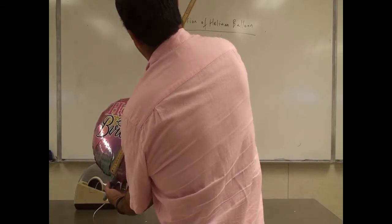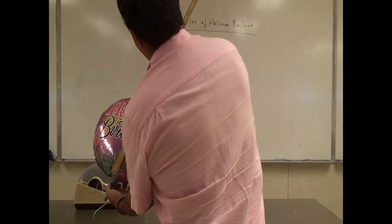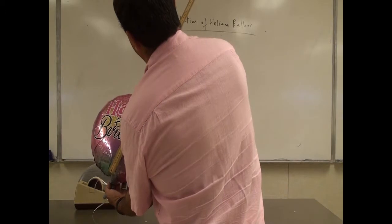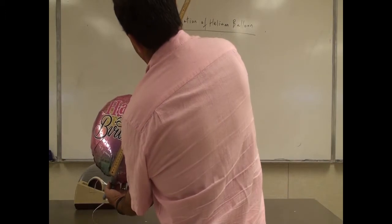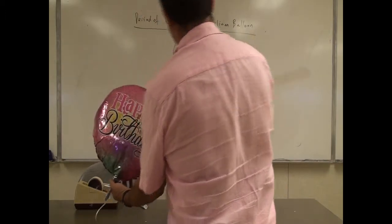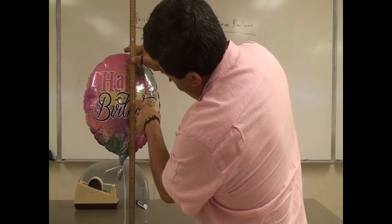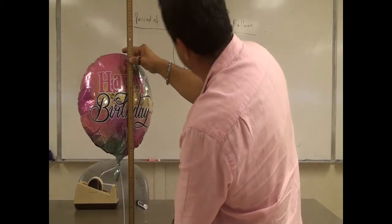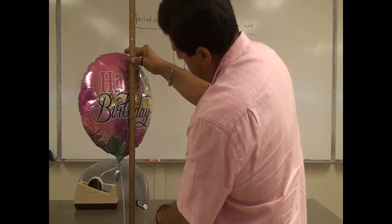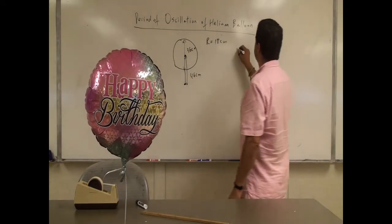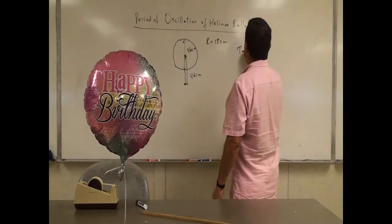Okay, the diameter is about 36 centimeters, and the distance from the pivot point is about 46 centimeters. Now, what is the period of oscillation of the balloon going to be?